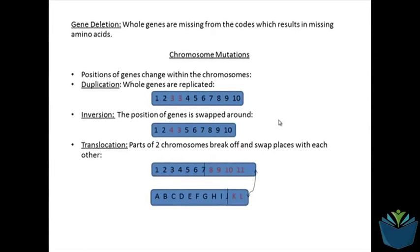Here are some of the types of mutations that can be produced — not only point mutations and deletions, but also changes where the positions of genes change within chromosomes. You can get a duplication, where a whole gene is replicated; an inversion, where the position of some genes is swapped; and a translocation, where whole sections of chromosomes break off and are replaced into a different section. For this course, you would probably only need to know about point mutations and deletions, but obviously there are other types.